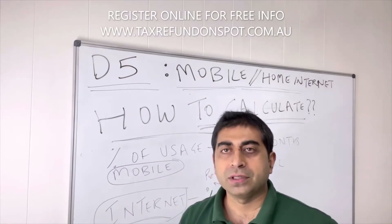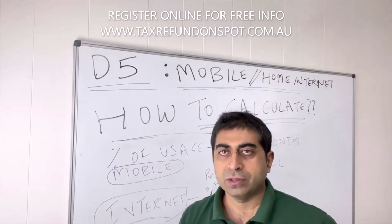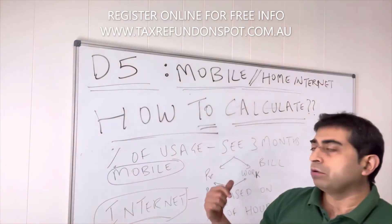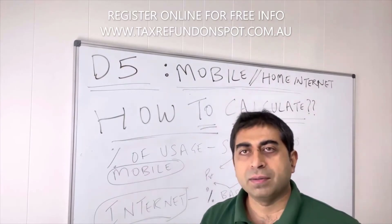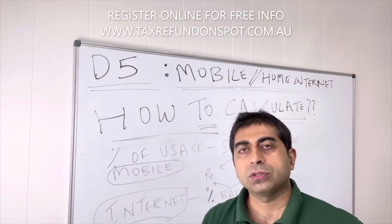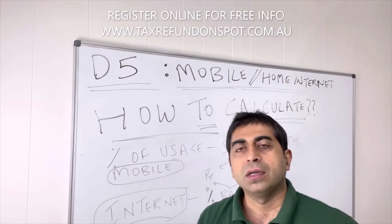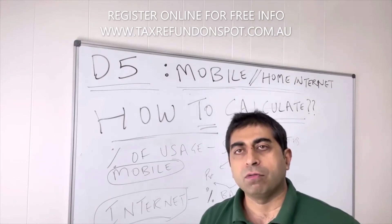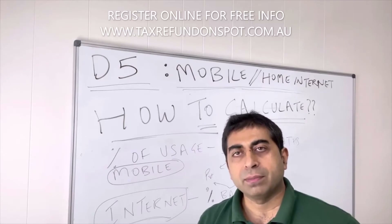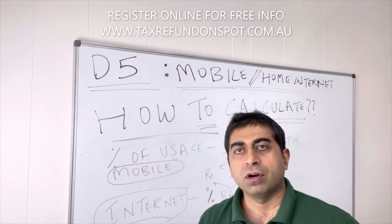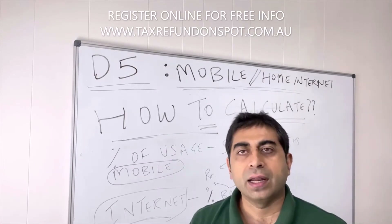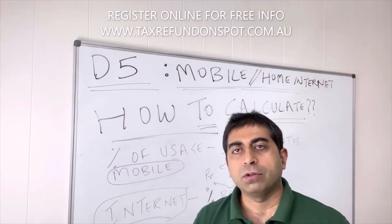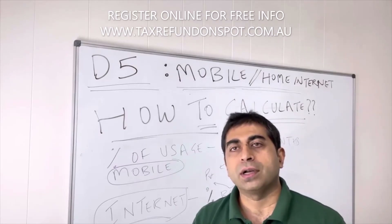How do you calculate the percentage or ratio? It's very easy. For mobile, you have to look at the last 3 months of bills. Find out the total number of calls you made for work purposes and calculate an approximate percentage of work calls compared to your private calls. Then you can claim the total amount for the full 12 months using that percentage.